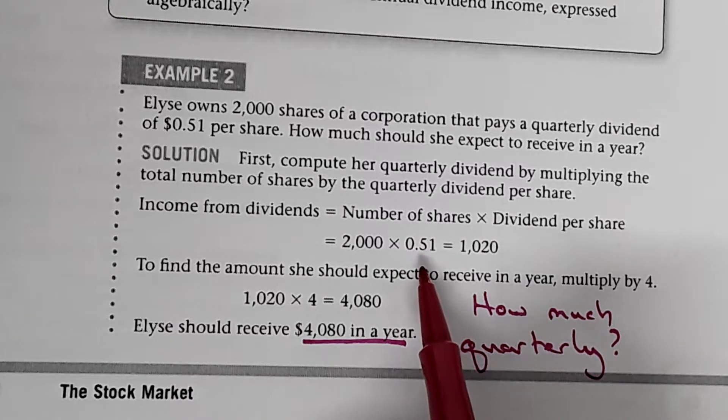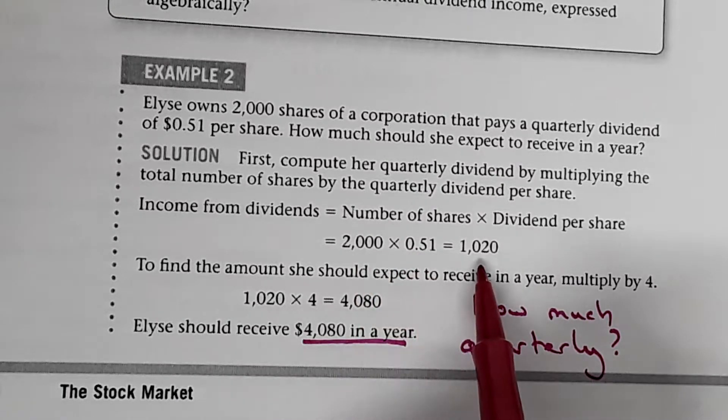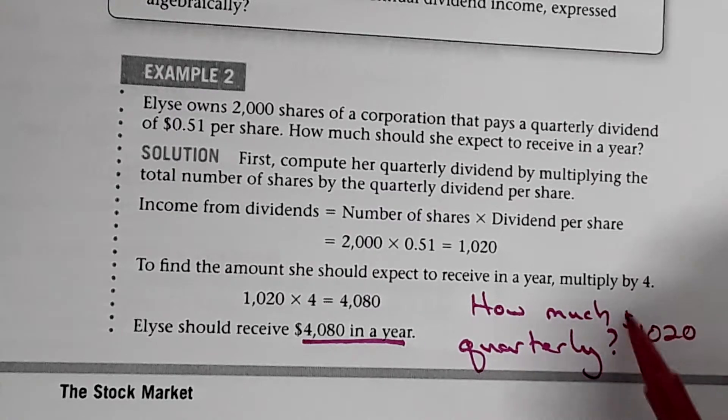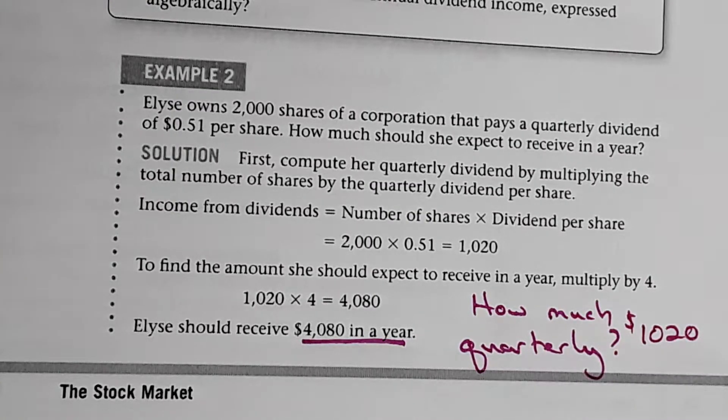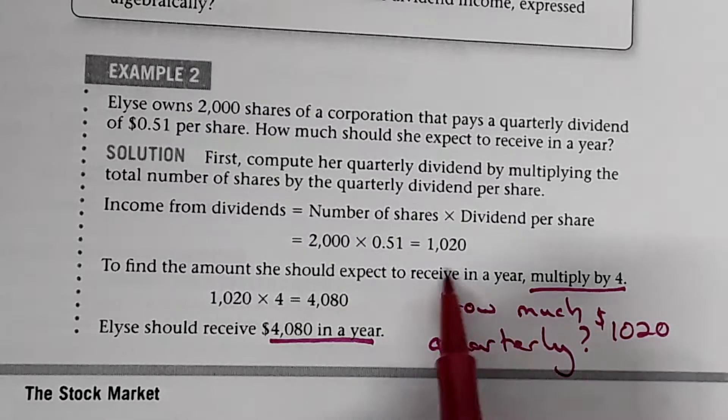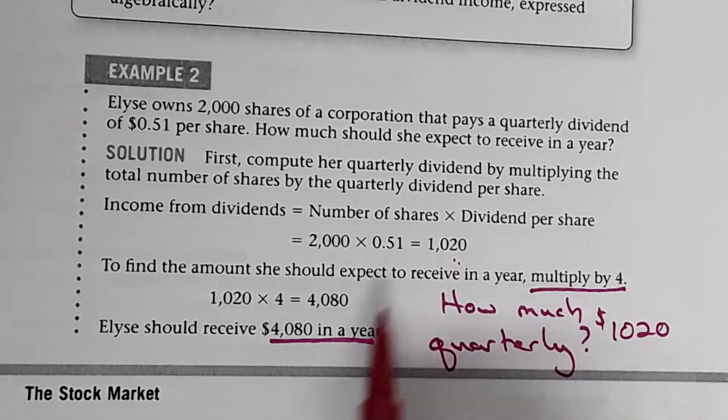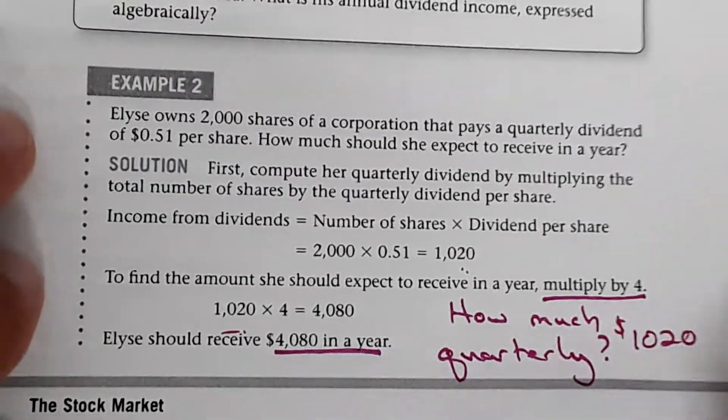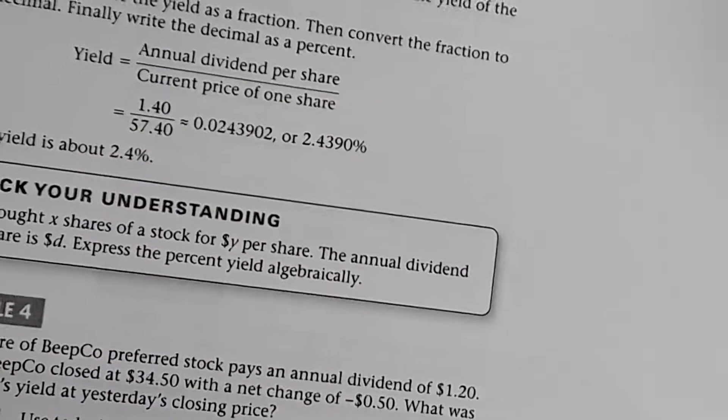$0.51 per share. So 2,000 times $0.51, this is what she gets every three months. So she gets $1,020 quarterly. To see how much she wants to get in a year, simply multiply by four. So take this amount. This is the quarterly amount. Every three months, multiply it times four to figure out how much she gets in a year. So 1,020 times four is $4,080. That's how much dividends she would receive in a year.